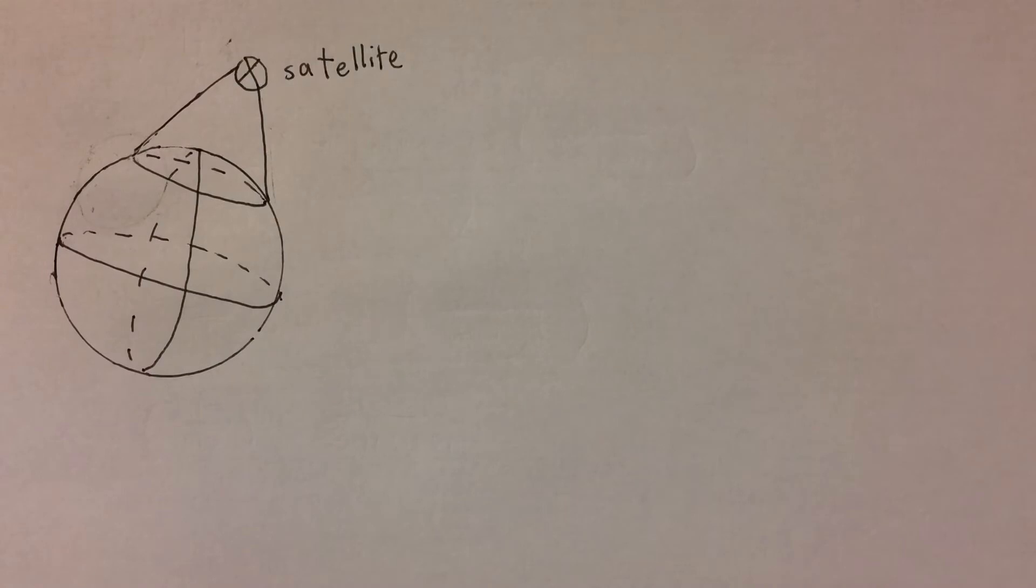To answer this problem, first we need to understand the diagram a little better. The key fact missing from the diagram is that the two lines that make up the boundary of what the satellite can see are tangent to the Earth. So they are perpendicular to the radius of the Earth and therefore make a right triangle that will allow us to use trigonometric ratios to describe the relationship between the variables at hand.